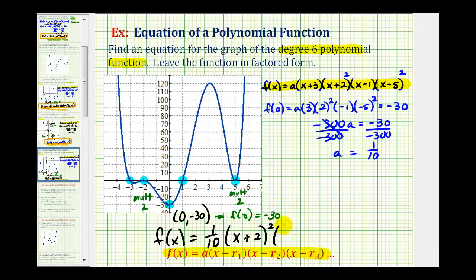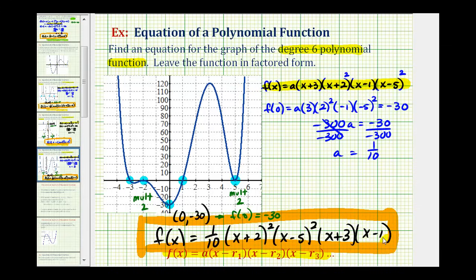Then (x - 5)² second, then we still have a factor of x + 3 and a factor of x - 1. I hope you found this helpful.